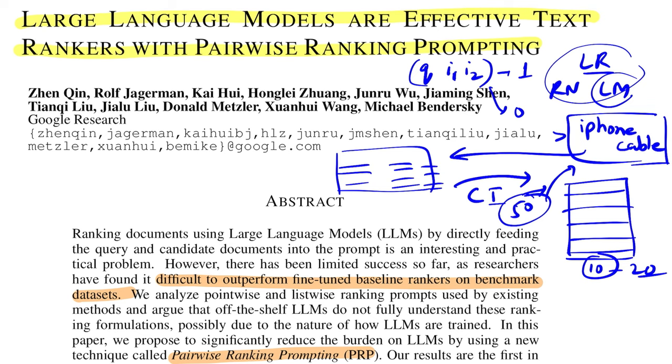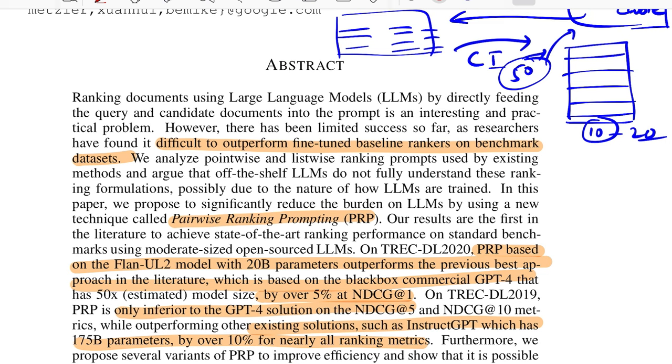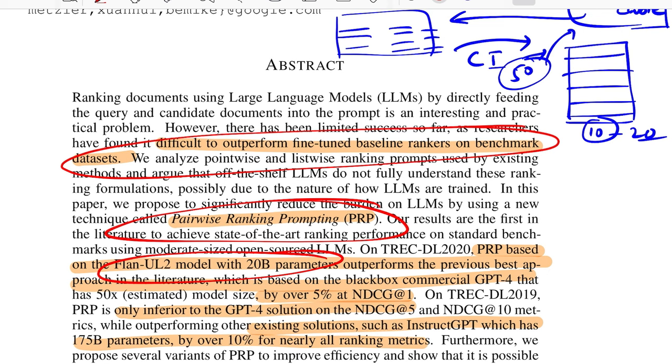They say with limited success of using them as a re-ranker, it's difficult to outperform the fine-tuned baseline rankers on the benchmark datasets. Their approach, what they propose, is called Pairwise Ranking Prompting. With not even a very large model - they use FLAN-UL2, which is a 20 billion parameter model - they show that their model outperforms GPT-4, which is roughly 50x the size, on NDCG@1 with a 5% margin. Whereas on the 2019 dataset, it was inferior to GPT-4's performance but over 10% better than existing models like InstructGPT.